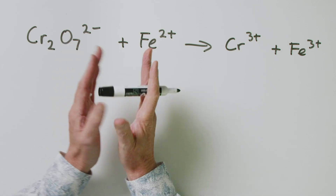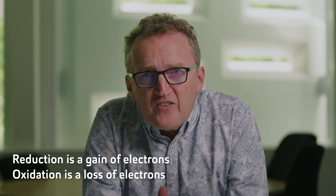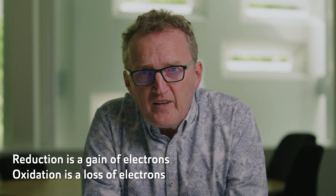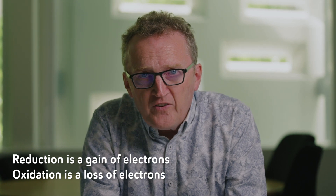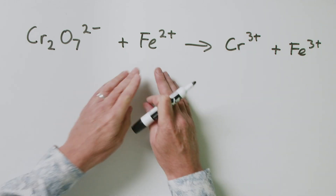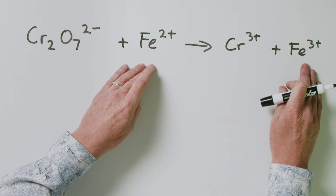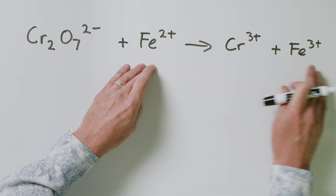Why do we do that? Well, the word redox is short for reduction and oxidation. Reduction is a gain of electrons and oxidation is a loss of electrons. We're going to separate those two processes into individual processes — one which involves a reduction and the other which involves an oxidation.